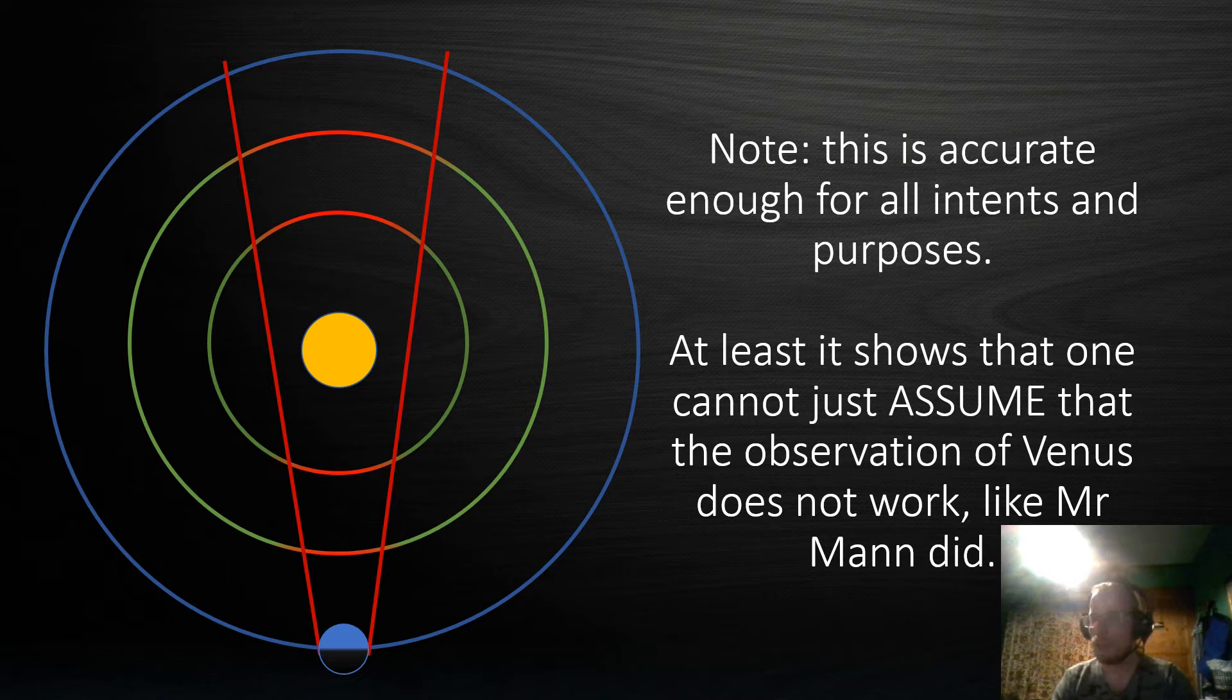Note this is accurate enough for all intents and purposes. At least it shows that one cannot just assume that the observations of Venus do not work like Mr. Mann did. Mr. Mann after all didn't present us with any mathematics, any diagrams or anything at all. He just assumed the observation of Venus should not be possible.